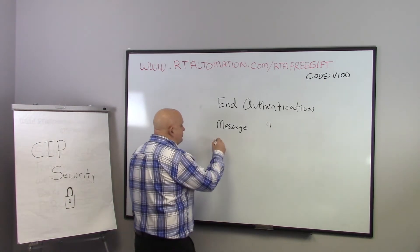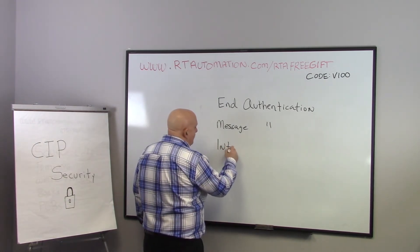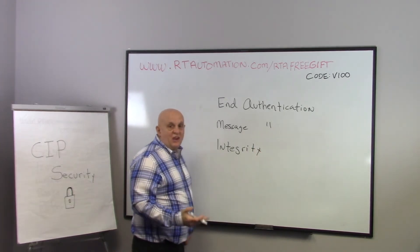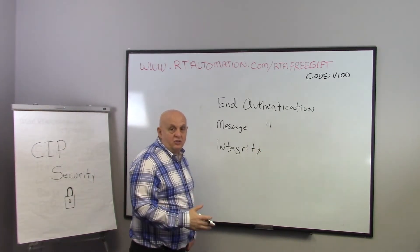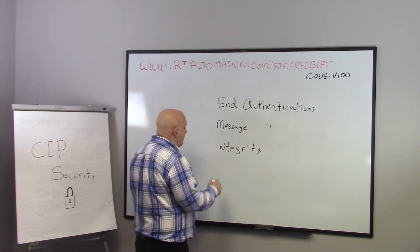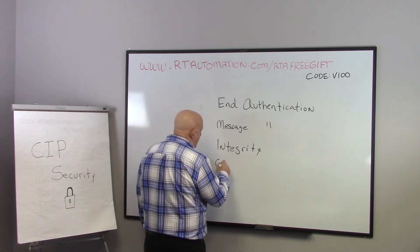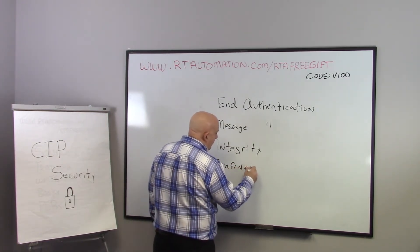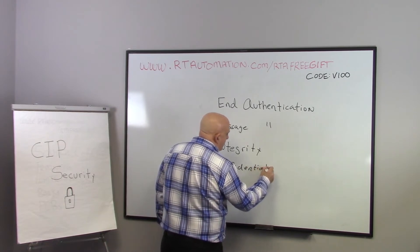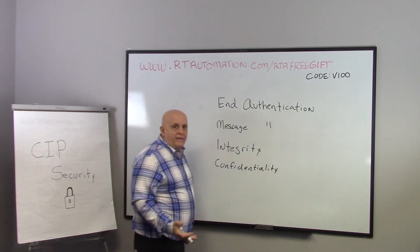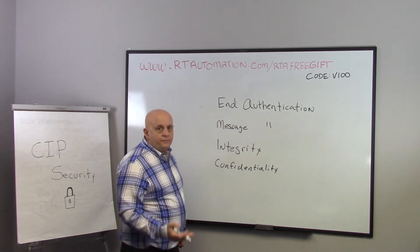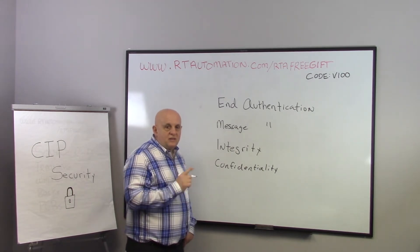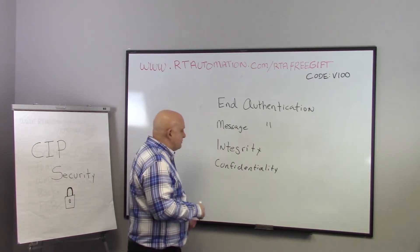And then the other two are integrity — making sure that we know the message hasn't been changed as it comes across the network — and the last thing is confidentiality, knowing that no one has been able to see what the contents of that message are.